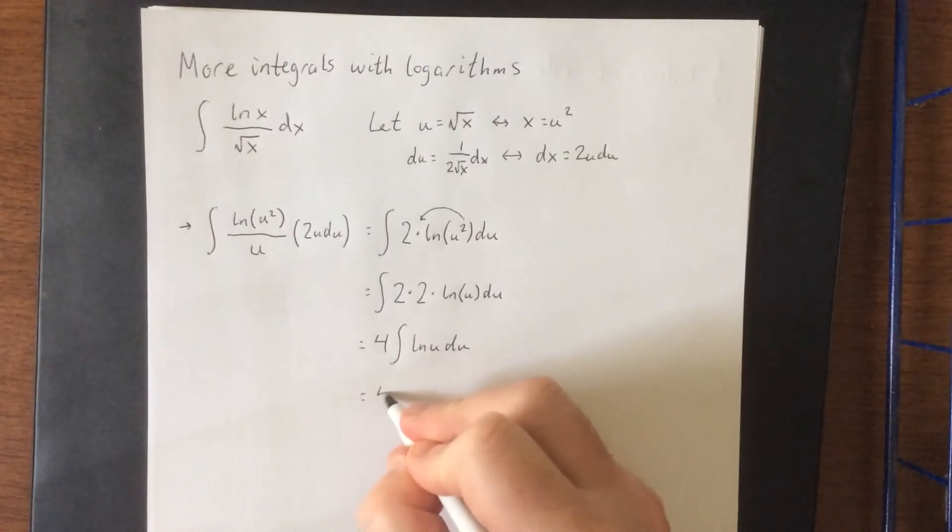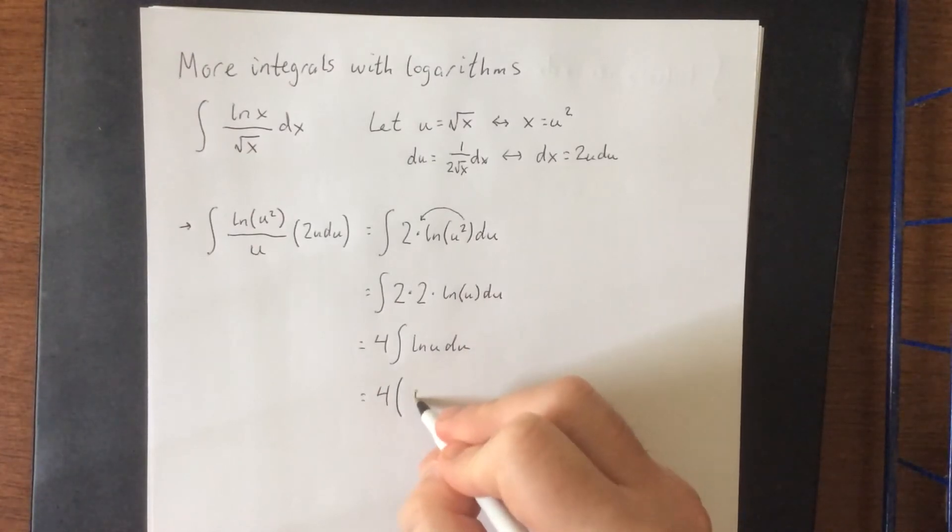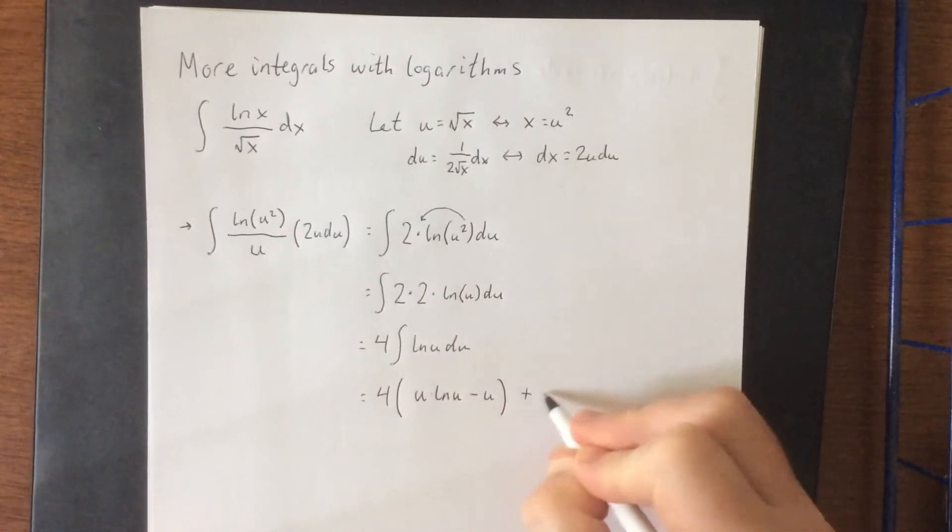The formula that we came up with for this was, it was with x's, but this time it'll be with u. So it'll be u times the natural log of u minus u plus a constant.